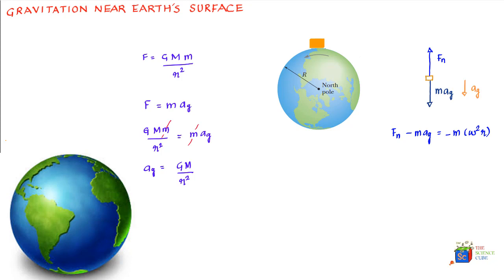If we substitute mg for Fn, which is nothing but what the weighing scale measures, what you get is mg minus mag is equal to minus m omega square r. And we can rewrite this equation like this.